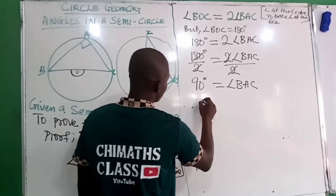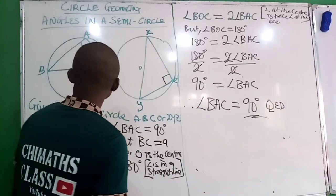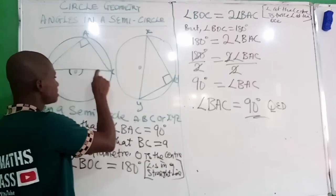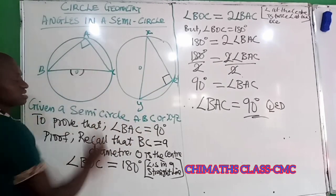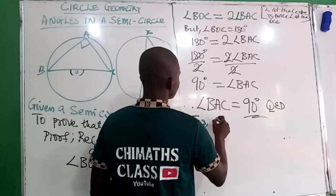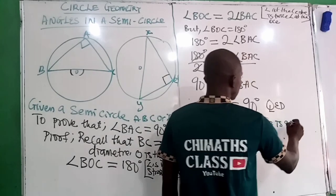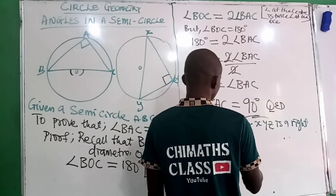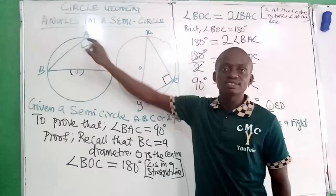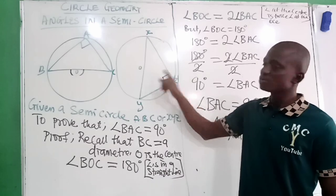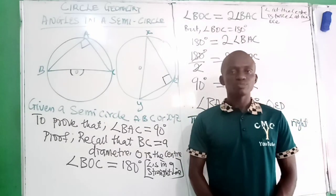Therefore, angle BAC is equal to 90 degrees. The angle suspended in a semicircle is equal to 90 degrees. It can be in this form or this form — both angles are 90 degrees. This tells us that triangle ABC, or triangle XYZ, is a right-angle triangle. Since the angle suspended at the semicircle is 90 degrees, this triangle automatically becomes a right-angle triangle. We have proven that the angle in the semicircle is 90 degrees.